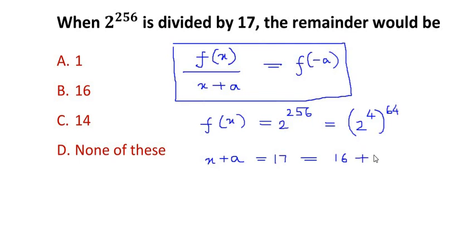That is, I am going to split it up. Now 16 can be written as 2 to the power of 4, and I'm going to write 1 as it is. So you can see some kind of pattern over here, because I changed 2 to the power of 256 as 2 to the power of 4 times 64, and 17 I split it as 16 plus 1, and 16 is nothing but 2 to the power of 4.